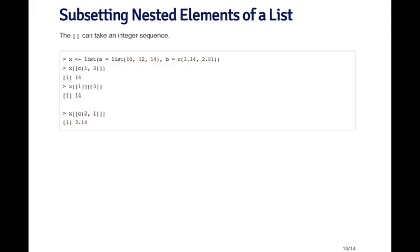The double bracket operator can also take an integer sequence, and you can think of it as recursing into the list. In this list, the first element a is itself another list with elements 10, 12, and 14. To extract the number 14 — the third element of the first element — I pass the vector c(1, 3) to x using the double bracket operator, which is equivalent to double-subsetting with 1 and then 3. I can also extract the first element of the second element by passing the integer vector c(2, 1) to get 3.14.